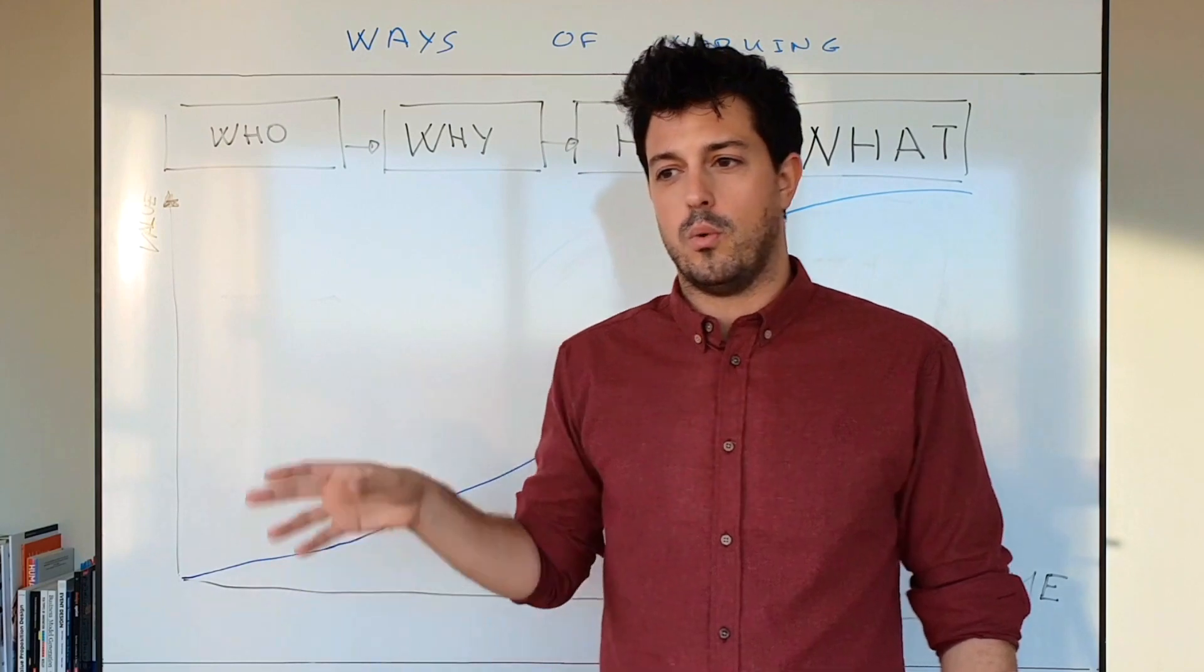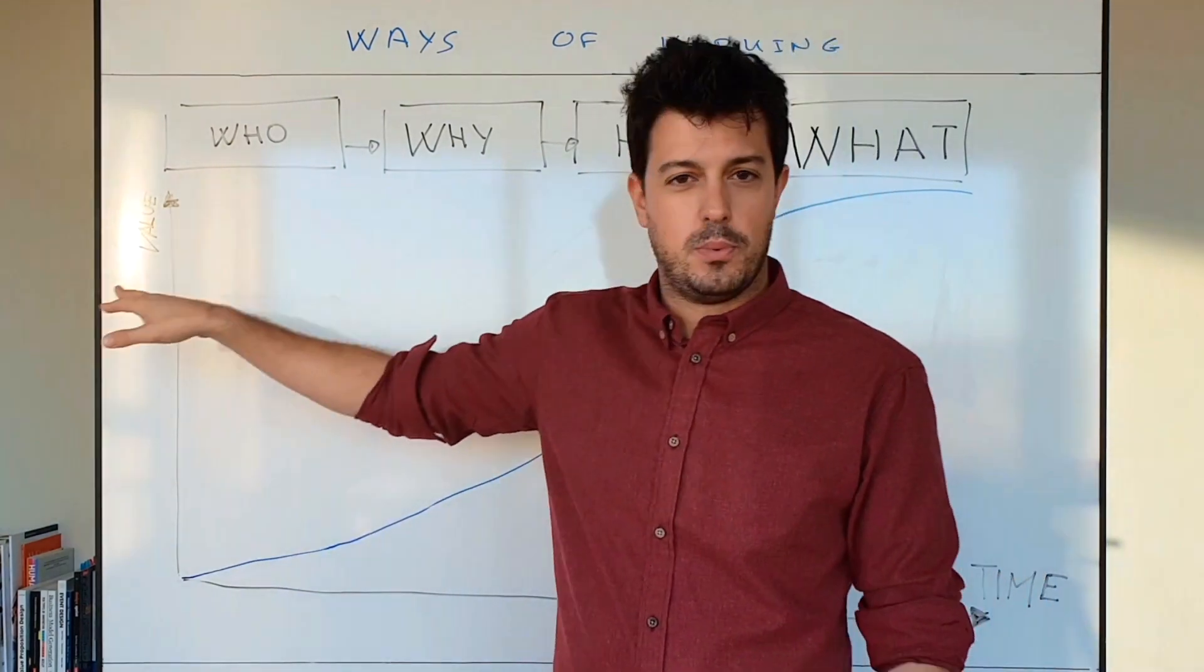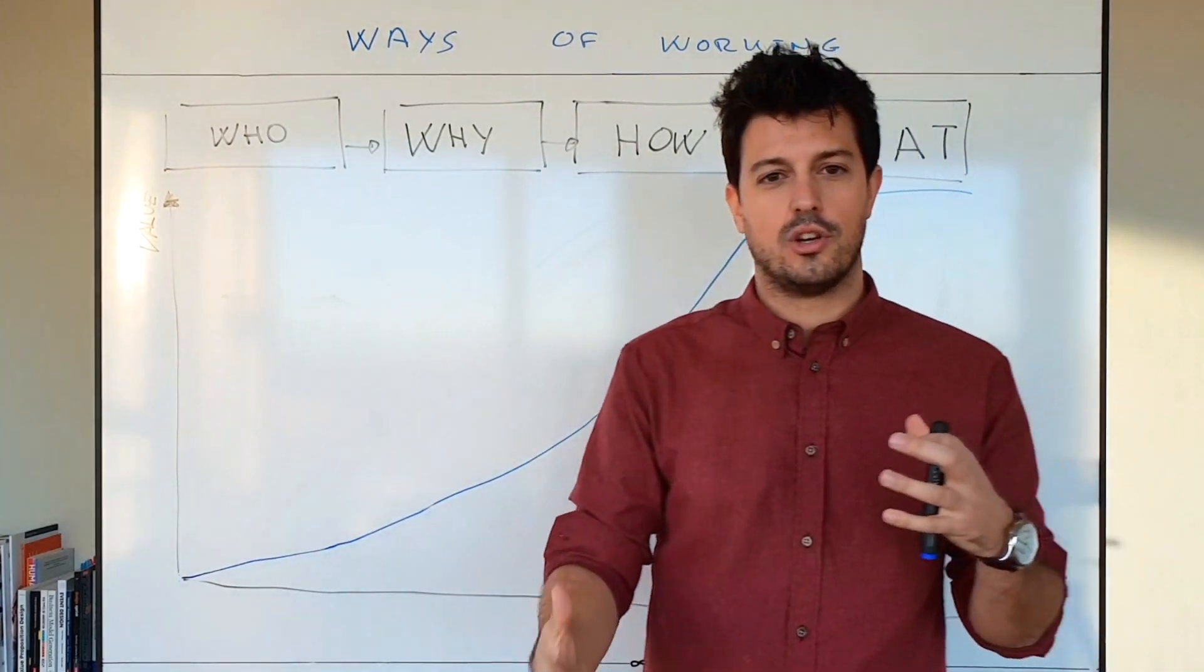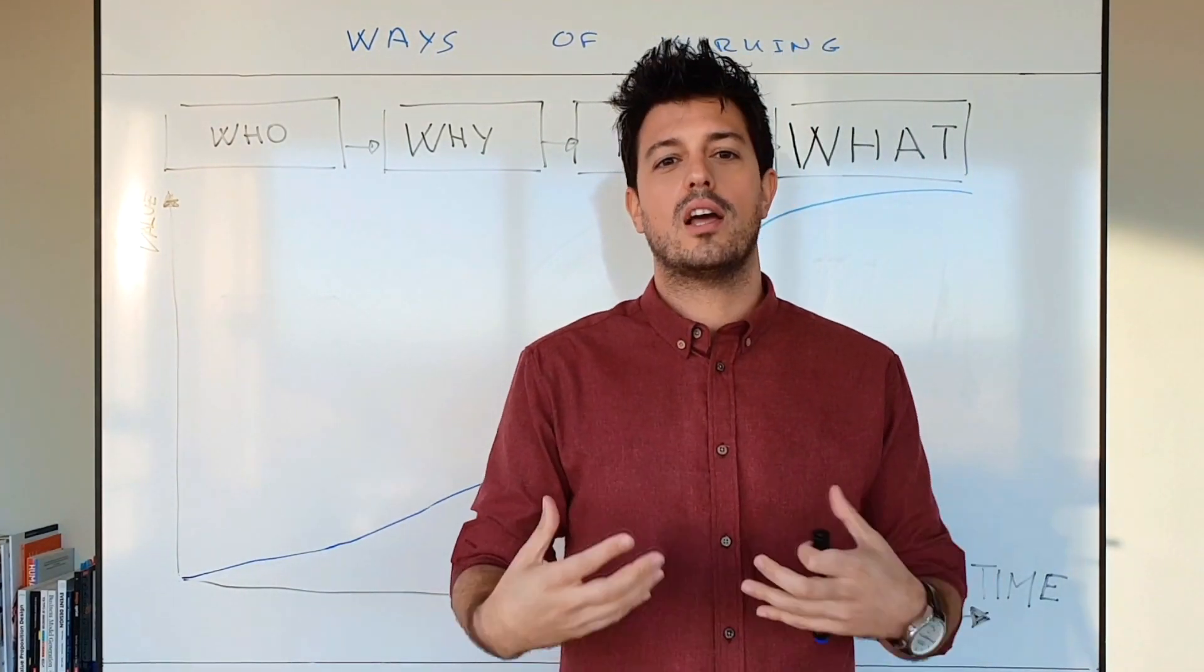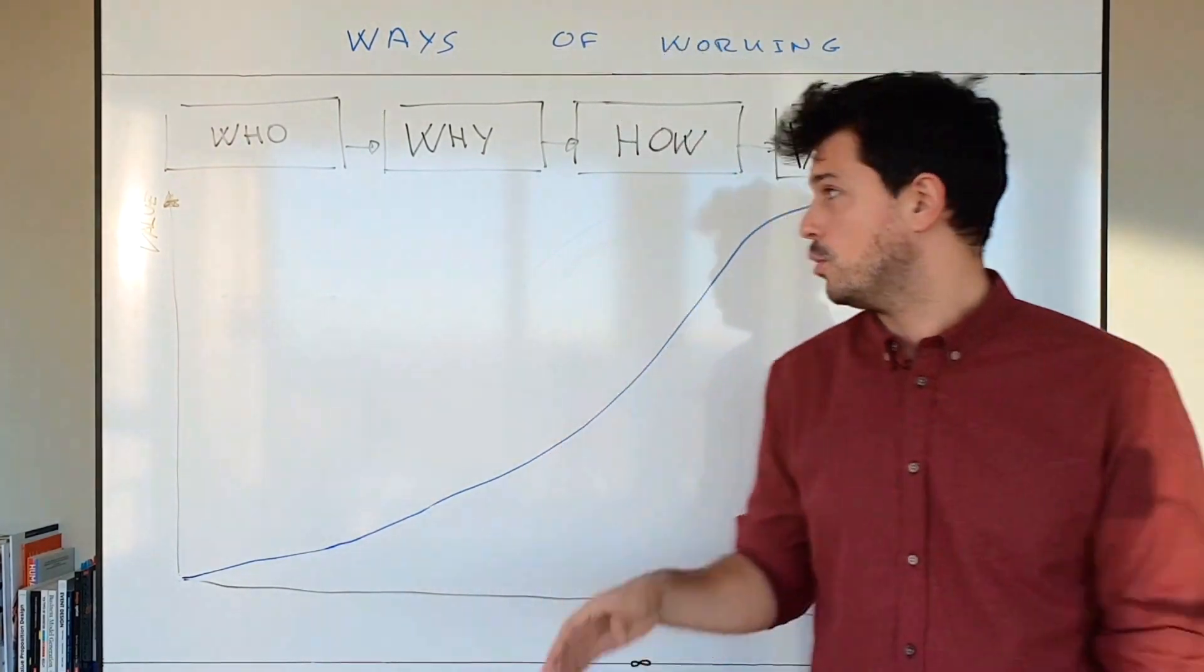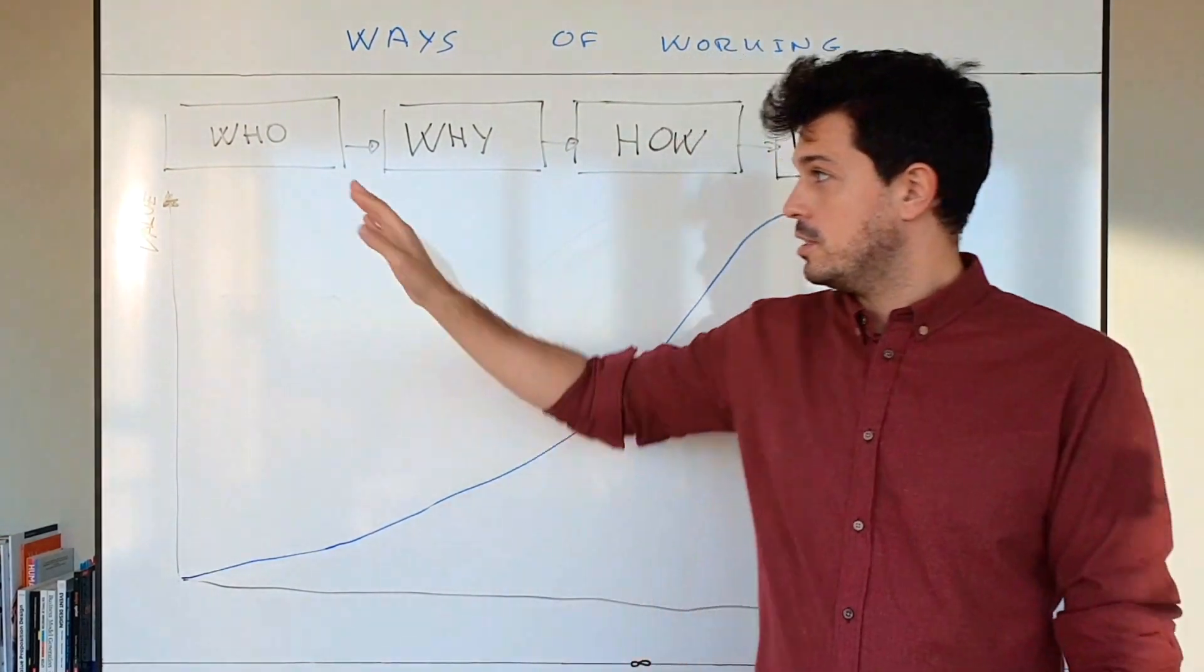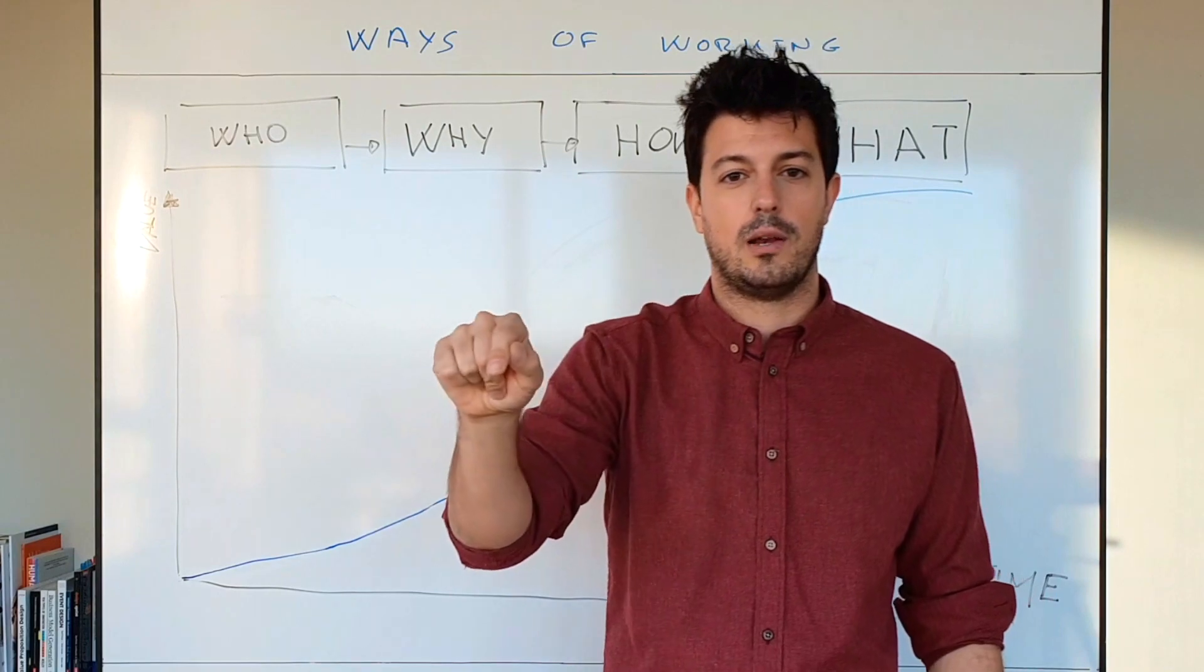The second is why we are doing this and why we're doing this for that specific customer. The third one is how we actually produce, how we actually do the tasks that we need to do. And the last thing is to be productive at the task itself. This is the framework I explained a little bit better in the other video.